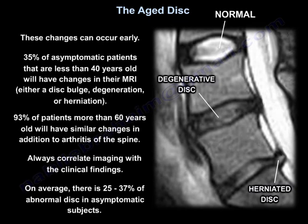These changes can occur early. 35% of asymptomatic patients less than 40 years old will have changes on MRI — either a disc bulge, degeneration, or herniation. And 93% of patients more than 60 years old will have similar changes, in addition to arthritis of the spine. On average, 25 to 37% of discs are abnormal in asymptomatic subjects. It is important to correlate imaging with clinical findings.